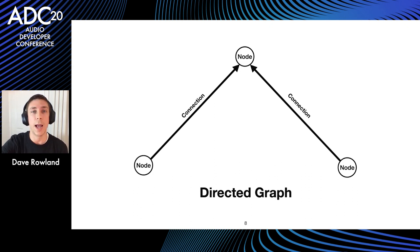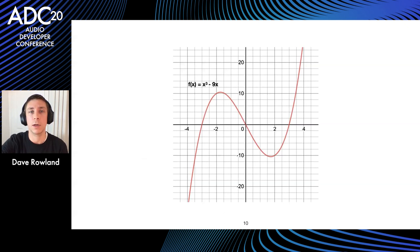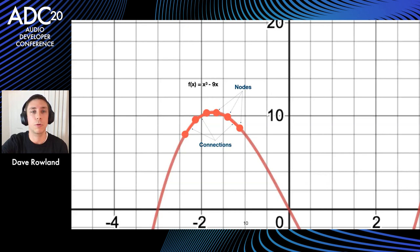If we add directions to these connections we get what's called a directed graph. You can now see why things commonly referred to as charts are actually graphs: a data plot is a graph constructed of nodes which are data points and connections joining them. Similarly, a mathematical function can be graphed by creating nodes and joining them with connections.